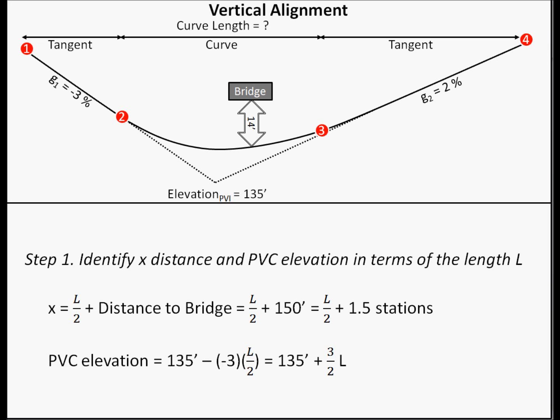Since we don't know the length of curve that will fit underneath the bridge, we need to specify the distance x and the PVC elevation in generic terms using the length. The bridge is 150 feet, or 1.5 stations beyond the PVI point. So in general terms, x equals L divided by 2 plus 1.5 stations. We know this because we are using a symmetric parabolic curve, and half of the length of the curve is on each side of the PVI.